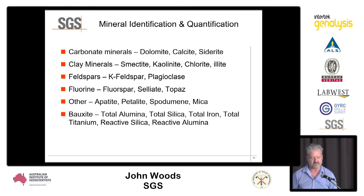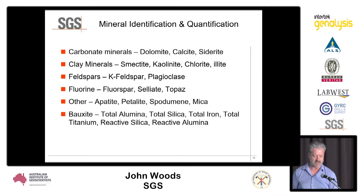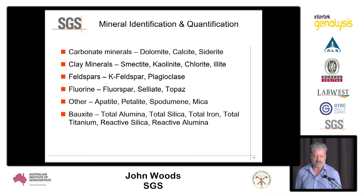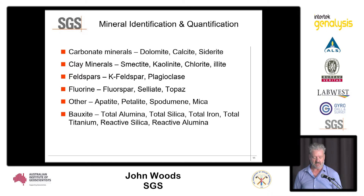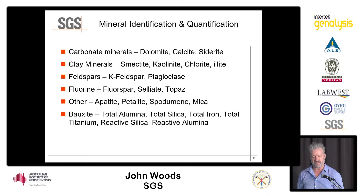We can analyse a wide range of feldspars, identify minerals associated with fluorine deposits, and for pegmatites we can look at spodumene contents, micaceous contents, and identify different types of micaceous phases. We can also tie mineralogy back to elemental contents — for example, with bauxites we can use the elemental and mineralogical contents to tie back to total alumina, total silica, total iron, and so on.